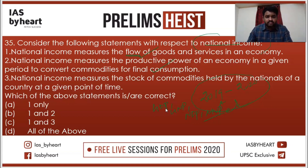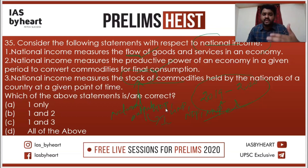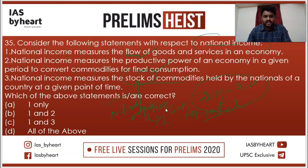The third statement says national income measures the stock of commodities — that is not correct. When we say stock, stock is nothing but national output, and national output is completely different from national income. Not all productions are the income of the country. Only production converted into finished consumer goods may be called income. So the stock of commodities is referred to as national output. Therefore, the third statement is wrong.